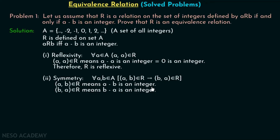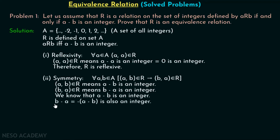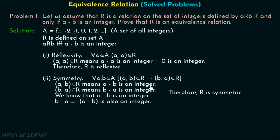According to this definition, it is given that A minus B is an integer. If A minus B is an integer, then B minus A — which is nothing but minus(A minus B) — is also an integer. We can write B minus A as minus(A minus B), which is also an integer. Therefore, we have proved that B minus A is also an integer, so R is symmetric.